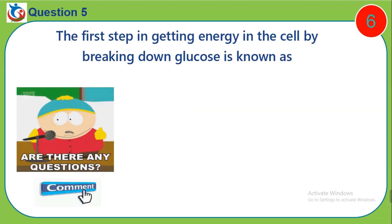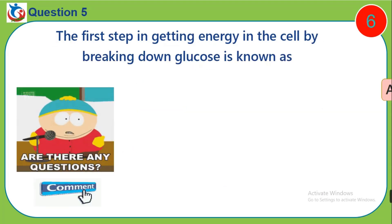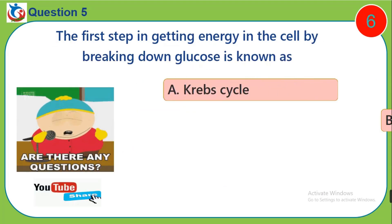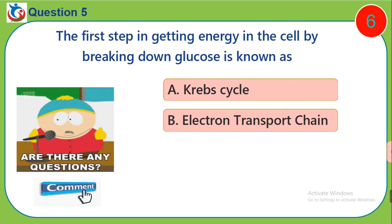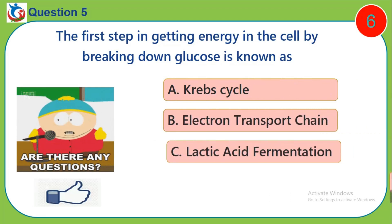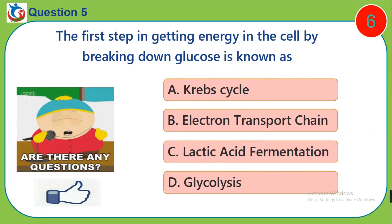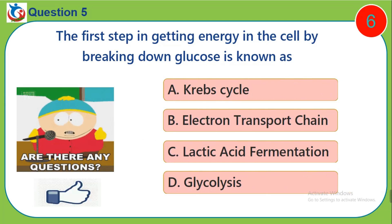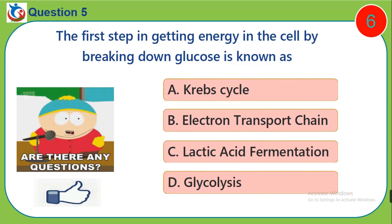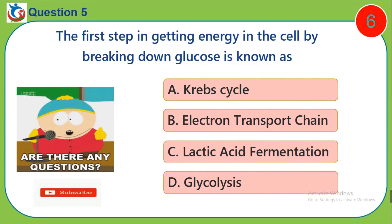Question 5. The first step in getting energy in the cell by breaking down glucose is known as: A. Krebs cycle. B. Electron transport chain. C. Lactic acid fermentation. D. Glycolysis.